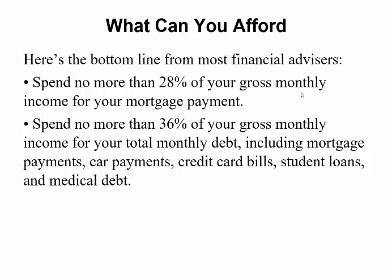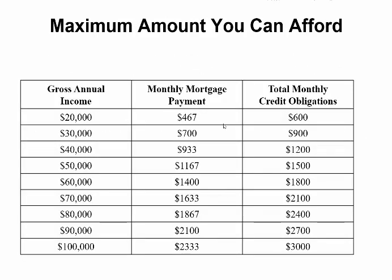Let's talk about what people can afford. For most financial advisors, you should spend no more than 28% of your gross monthly income on your mortgage payment. You should spend no more than 36% of your gross monthly income for your total monthly debt — this includes mortgage payment, car payment, credit cards, student loans, and medical debt. Remember this: 28-36. For example, if your total annual income is $20,000, your monthly mortgage payment at 28% is $467 and your total monthly obligations at 36% are $600. If you're making $100,000, you can afford a mortgage payment of $2,333 with a total debt obligation of $3,000.